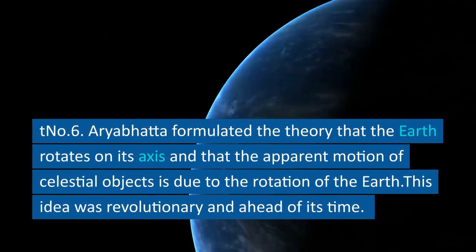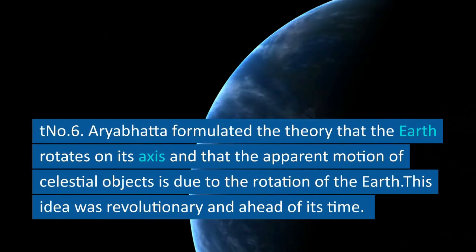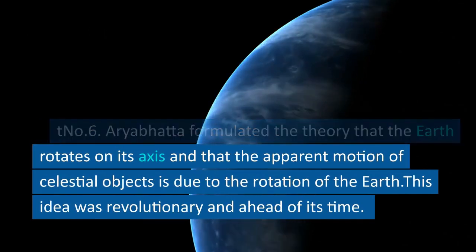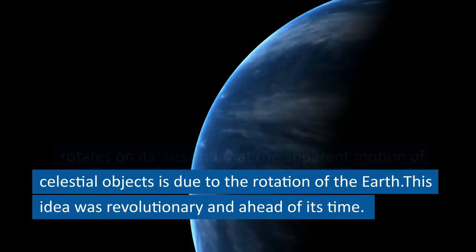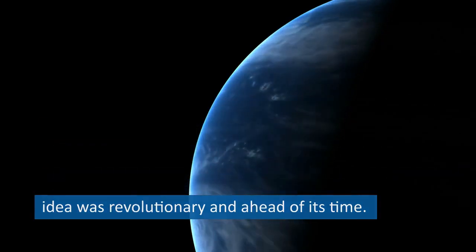Number 6. Aryabhata formulated the theory that the Earth rotates on its axis and that the apparent motion of celestial objects is due to the rotation of the Earth. This idea was revolutionary and ahead of its time.